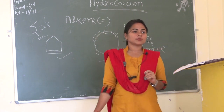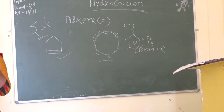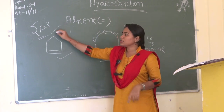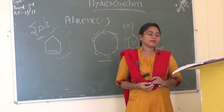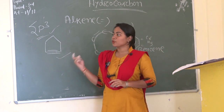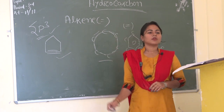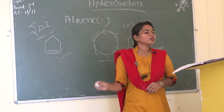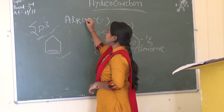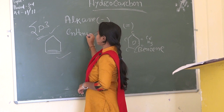Why is it called sp3 hybridized? Because there are one lone pair and three sigma bonds — making four bonds total — so it is called tetravalent and sp3 hybridized. Example: methane. Methane is the first member of the alkane group. The general formula for alkane is CnH2n+2.